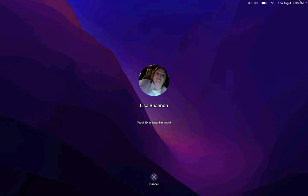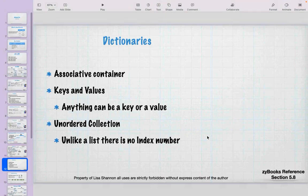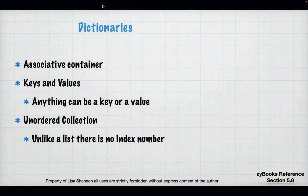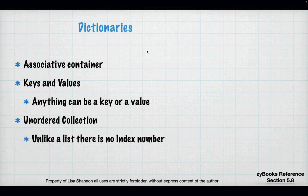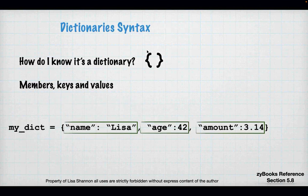Now let's go through dictionaries. Dictionaries are what's called an associative container — you associate a key value pair. There is no concept of an index in a dictionary. It is unordered: because there's no index, there is no order. I like dictionaries because they allow you to associate meaning with a value — something there's no way to do in lists.